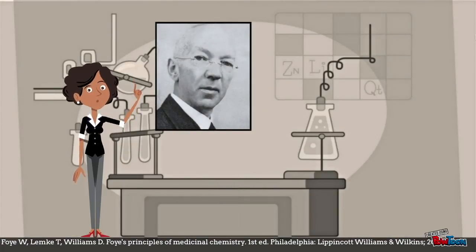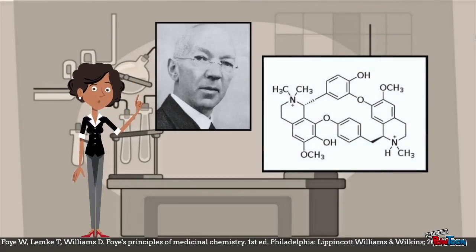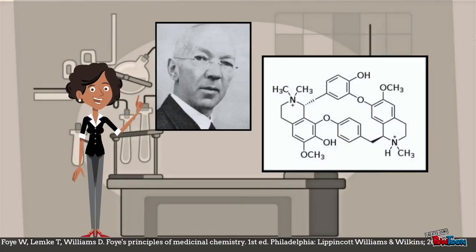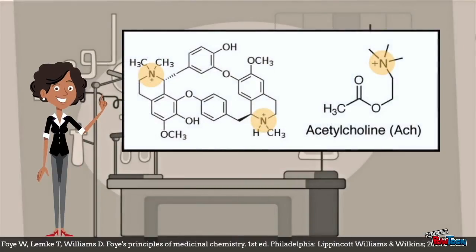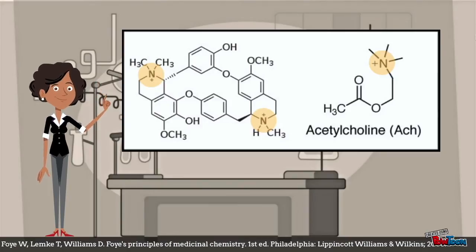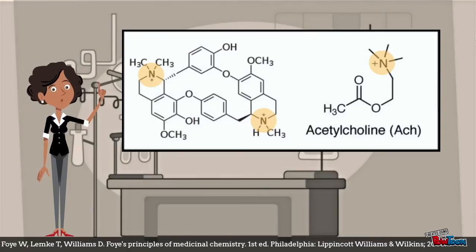Harold King was an organic chemist working for the National Institute of Medical Research who discovered D-tubocurarine in 1935. He isolated the compound and determined its structure. The two quaternary ammonium groups at opposite ends are structurally related to acetylcholine, where positive nitrogen atoms are attracted to the alpha subunits of the postsynaptic nicotinic receptors.